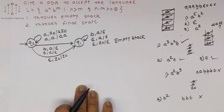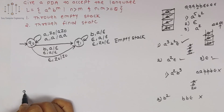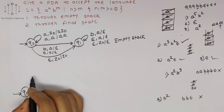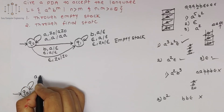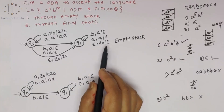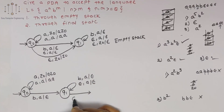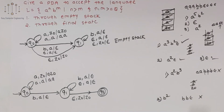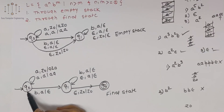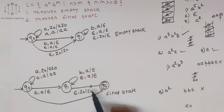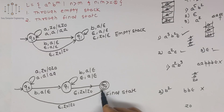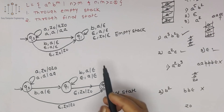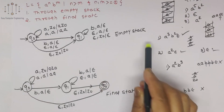This is the final pushdown automata for this example using empty stack. Now how to show it for the final state: we write the same transitions but add one more state as the final state. For incoming epsilon with Z0 in stack, instead of popping we keep Z0 as it is and change to the final state — that is no pop operation, just change state. For epsilon with Z0, keep Z0, meaning that string is also accepted.